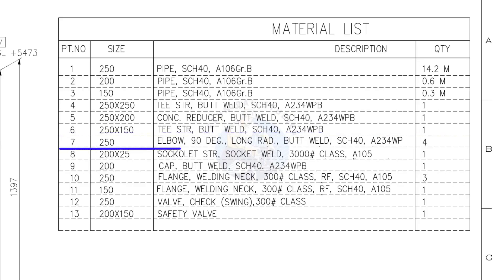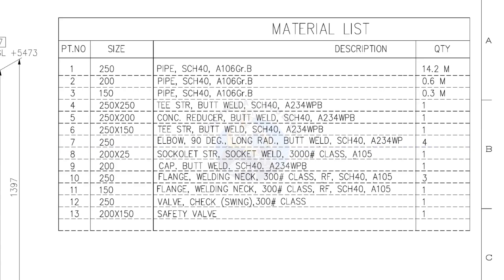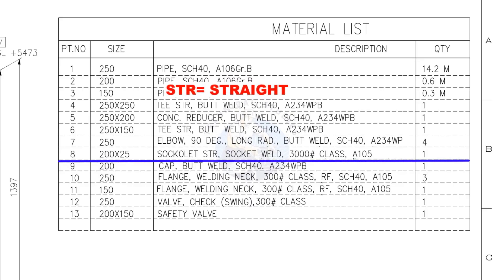Item number 7: 250 NB, 90 degree long radius elbow, butt welded type, schedule 40. Quantity: 4 numbers. Item number 8: 200 into 25, sokolet, socket welded. Class: 3000 pound. Quantity: 1.